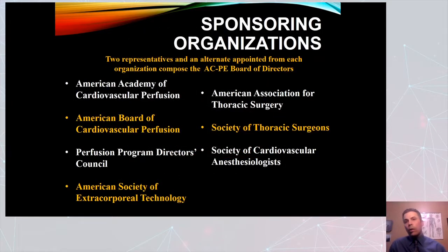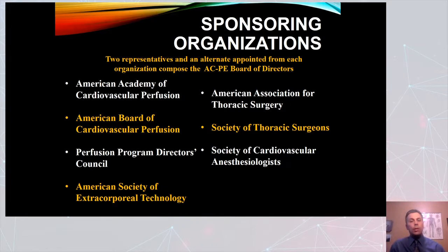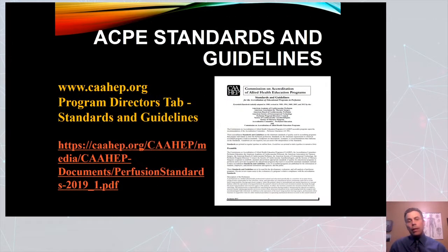These are the sponsoring organizations. Each organization has two members on the ACPE and they have an alternate. The members come from the American Academy of Cardiovascular Perfusion, the American Board of Cardiovascular Perfusion, the Perfusion Program Directors Council, the American Society of Extracorporeal Technology, the American Association for Thoracic Surgery, the Society of Thoracic Surgeons, and the Society of Cardiovascular Anesthesiologists. One of the biggest things the ACPE does is review and set the standards and guidelines that all programs have to follow.